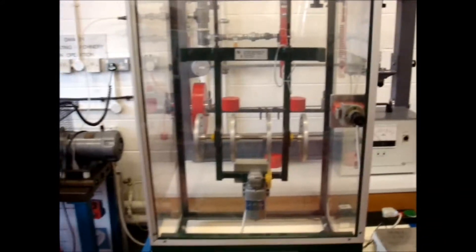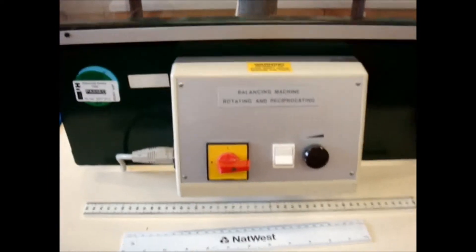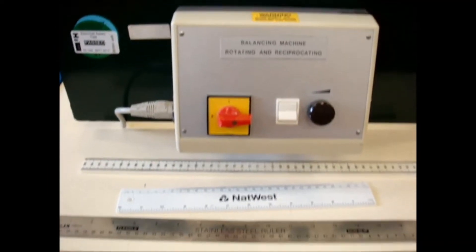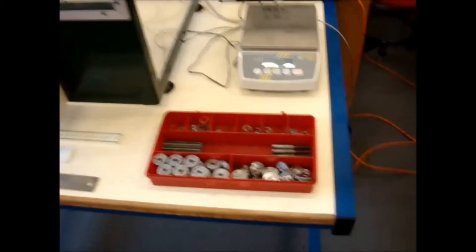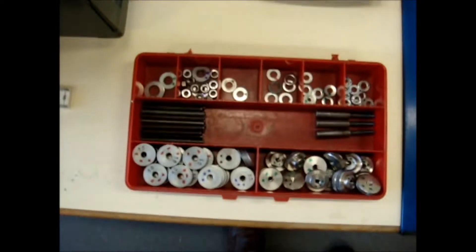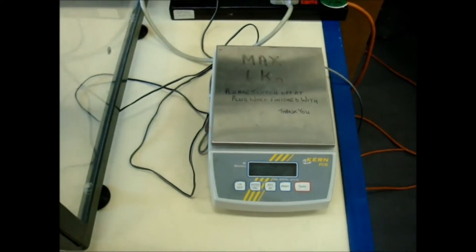First of all, this is the machine. We have here two control switches. Underneath we can see some rollers. Here we have the masses that we can add, and they all have a weight which we can measure on a digital scale.